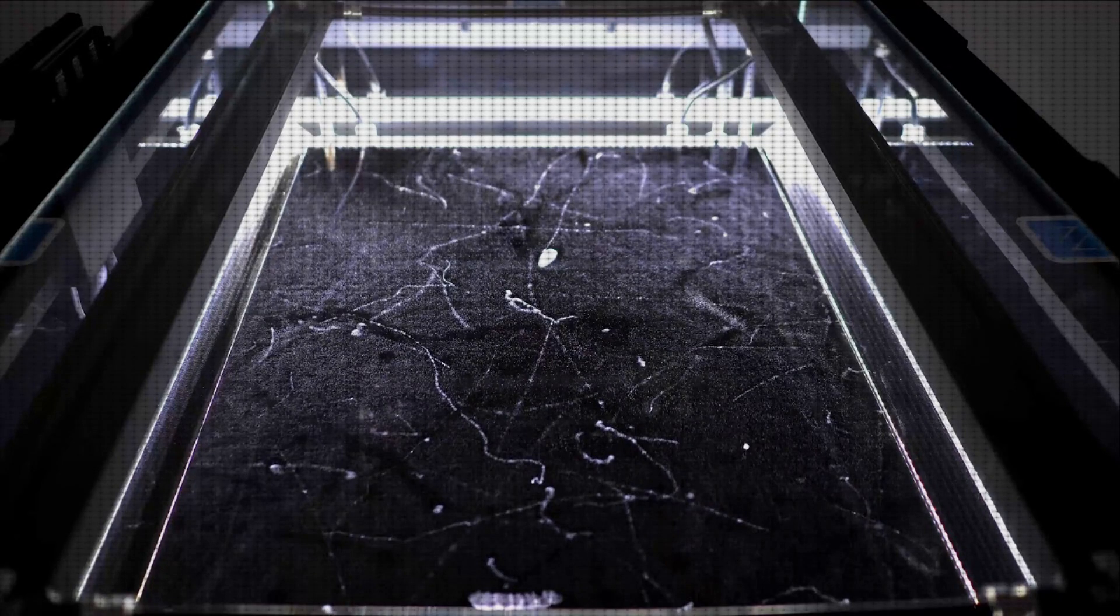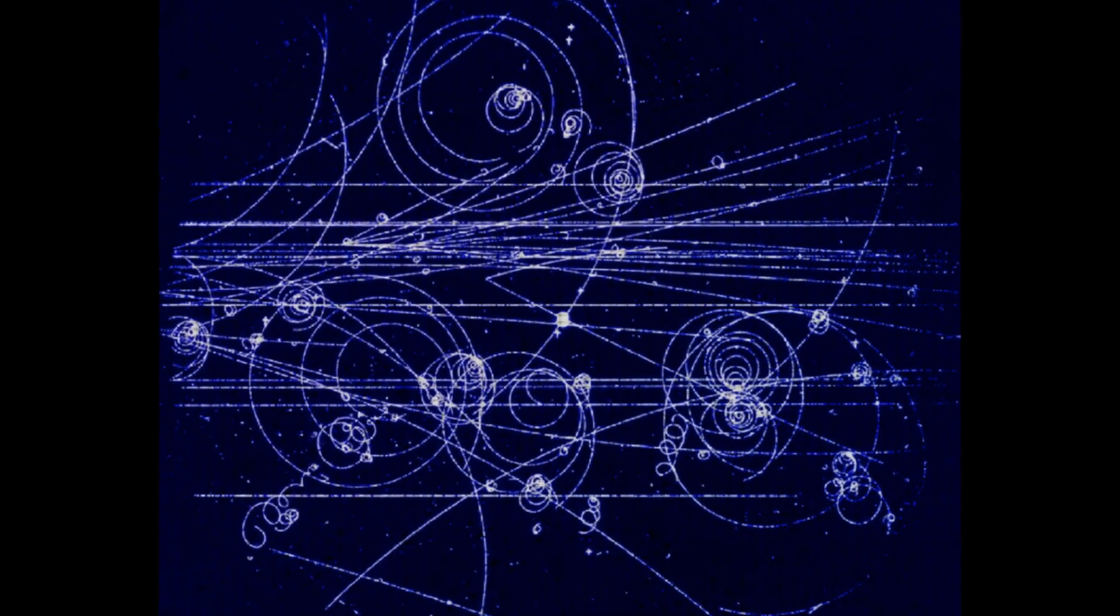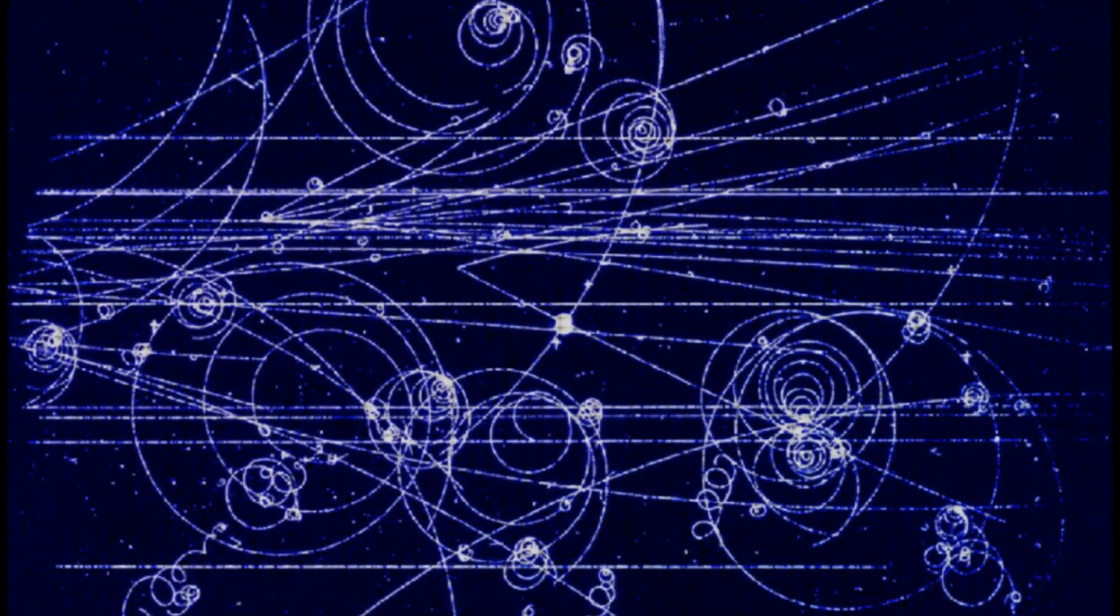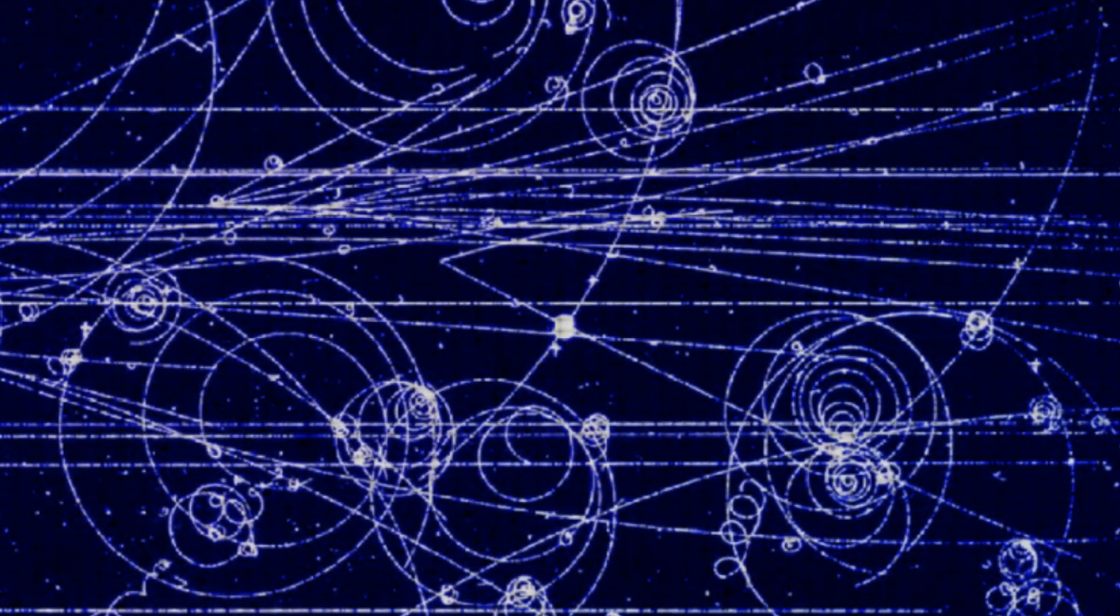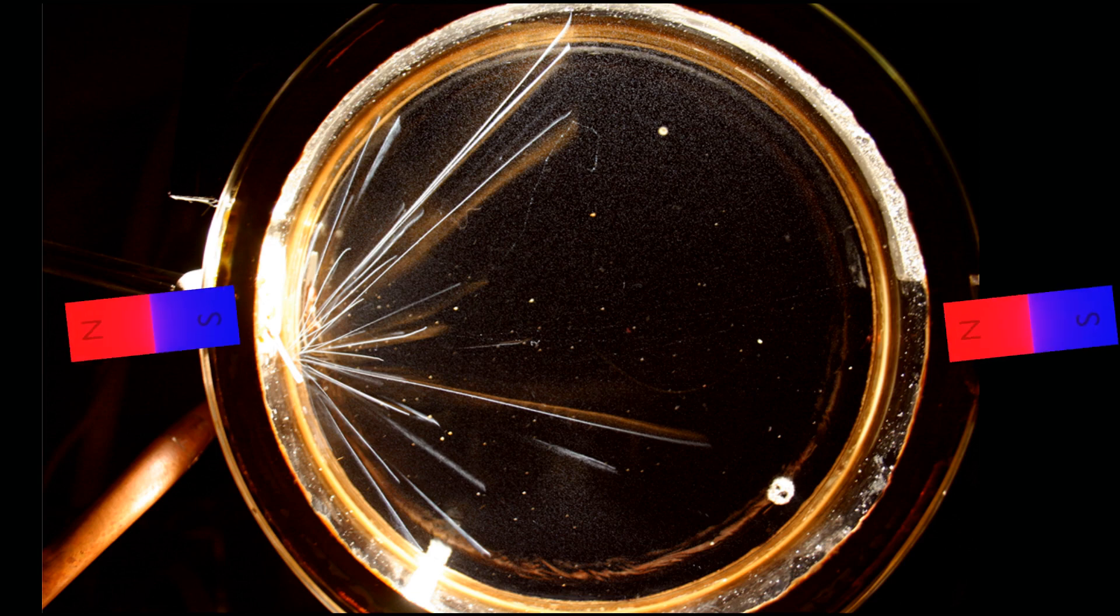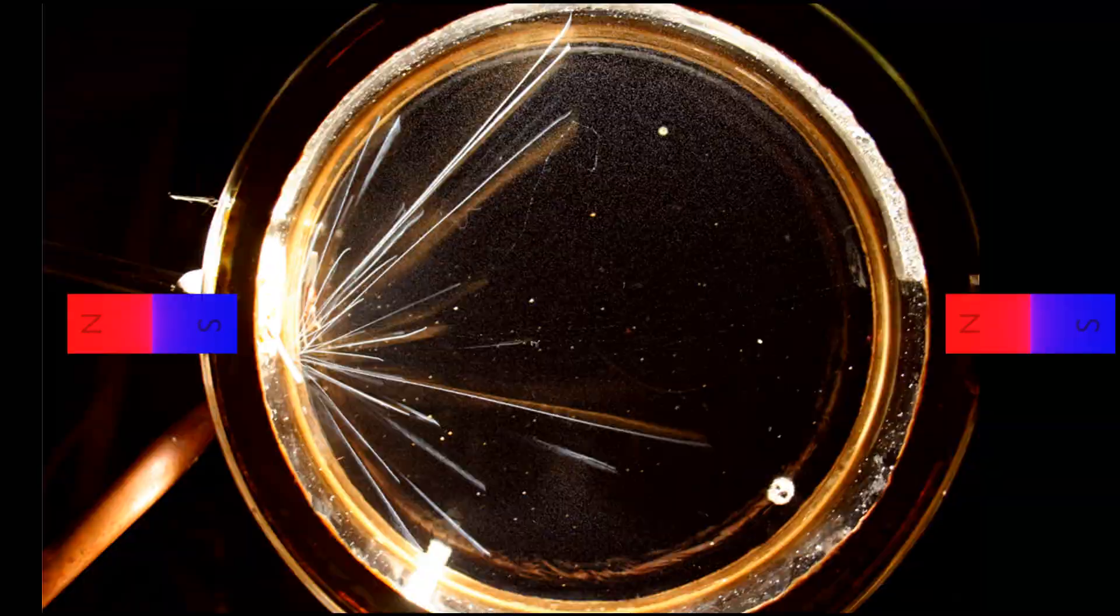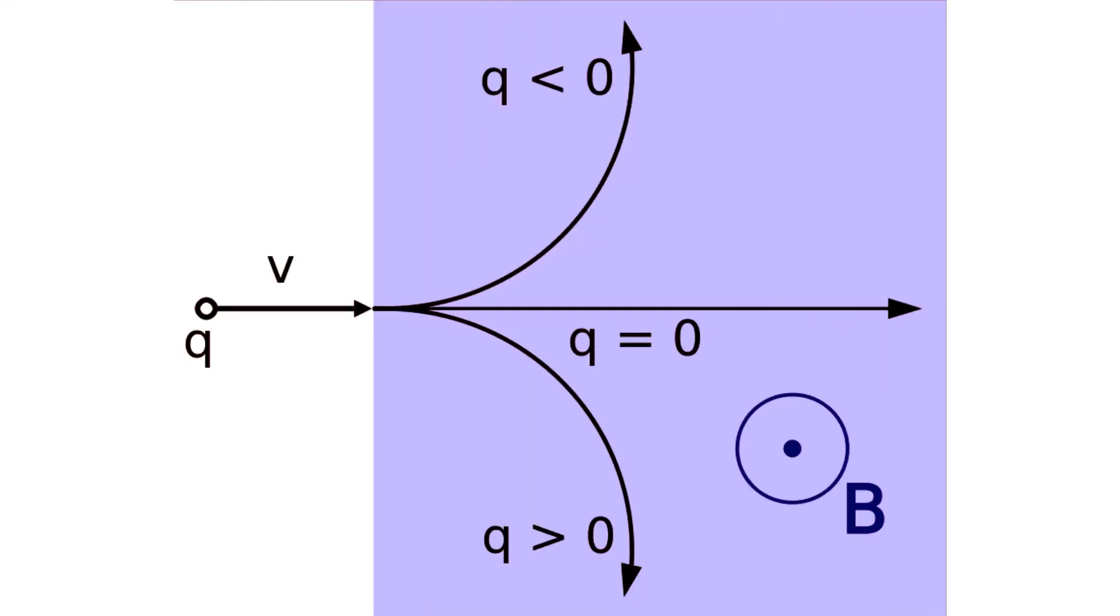Back to the topic: as each particle leaves some specific pattern in the cloud chamber, this pattern can be used to identify the particle. To make it even more interesting, if a magnetic field is applied to the chamber, due to Lorentz force, each particle has a specific radius of curvature and a direction of curvature.